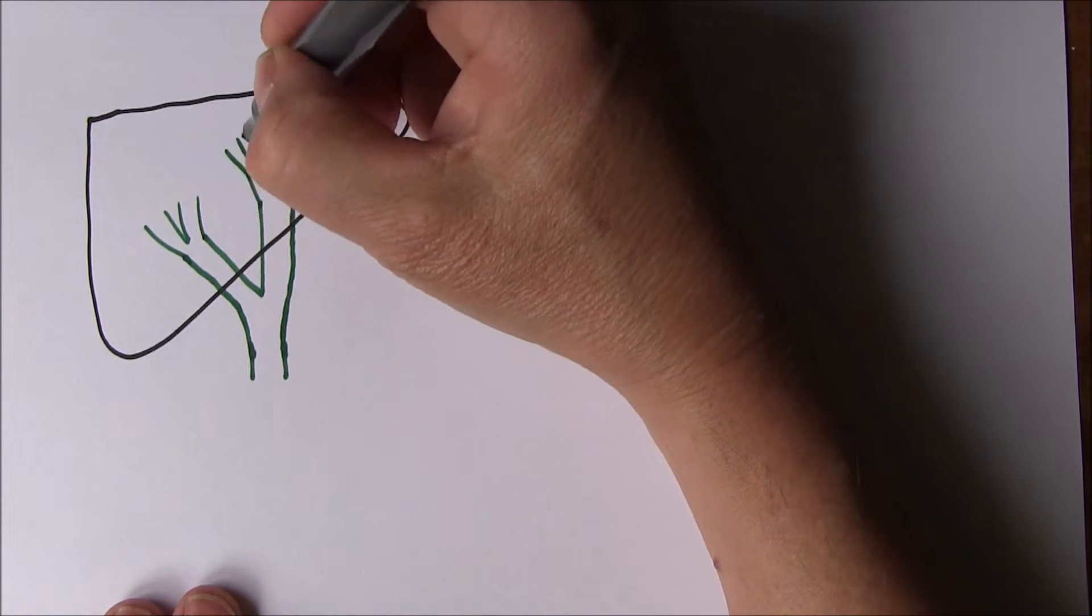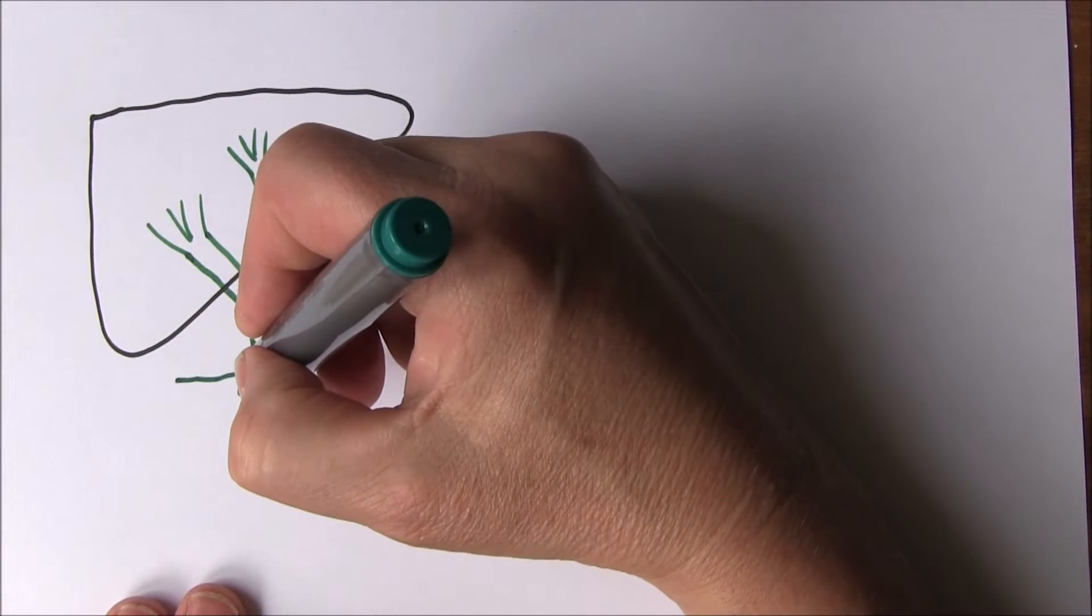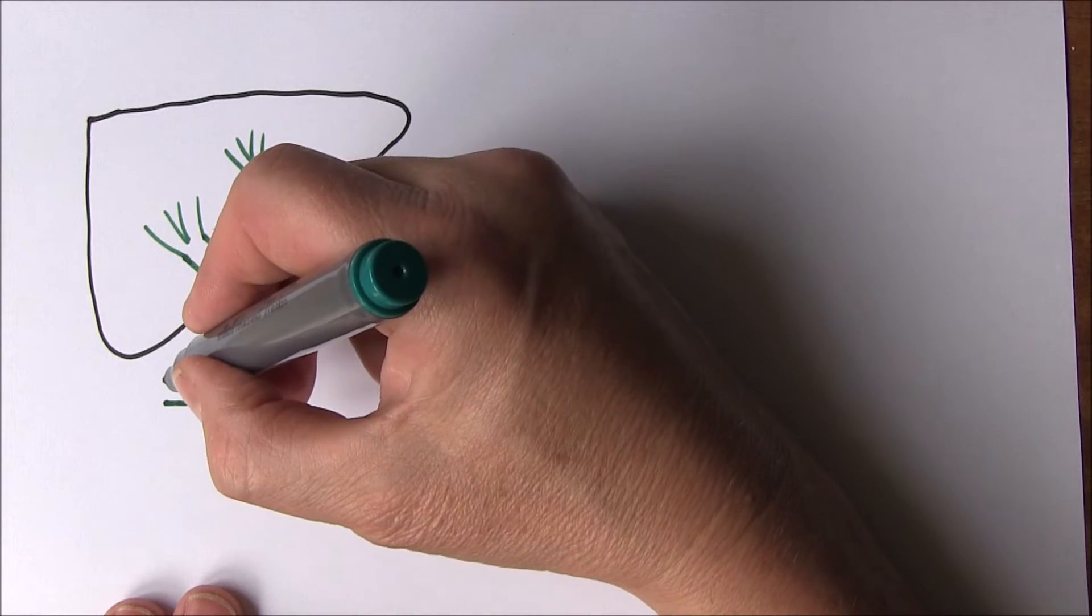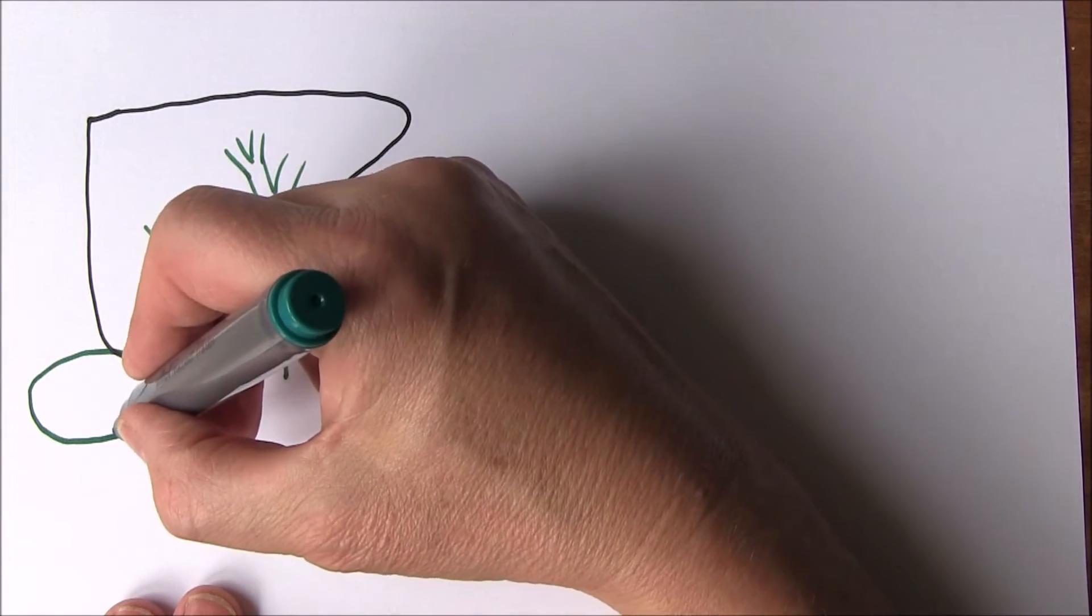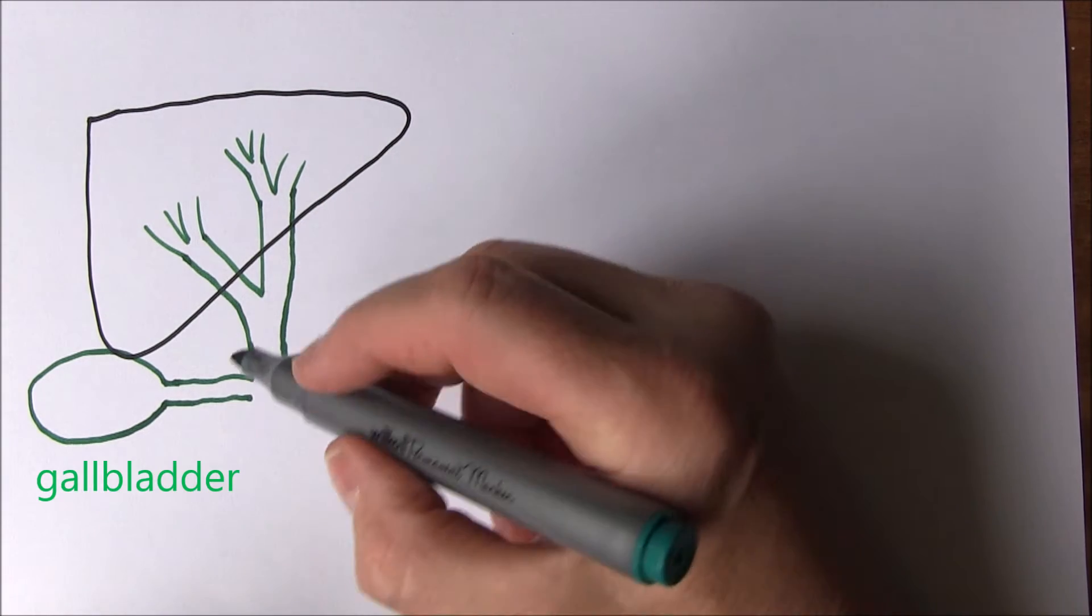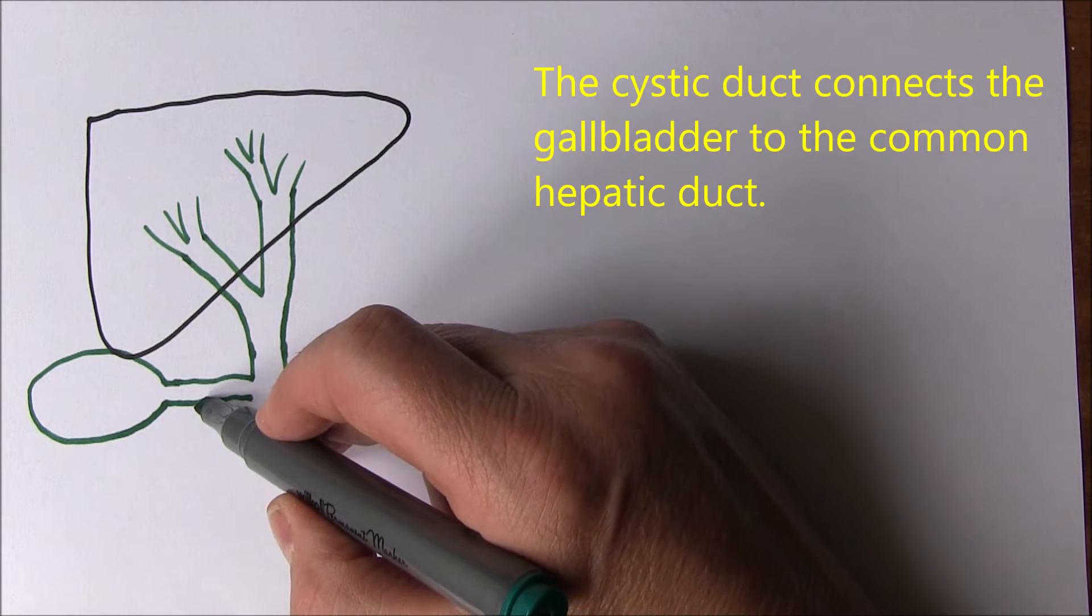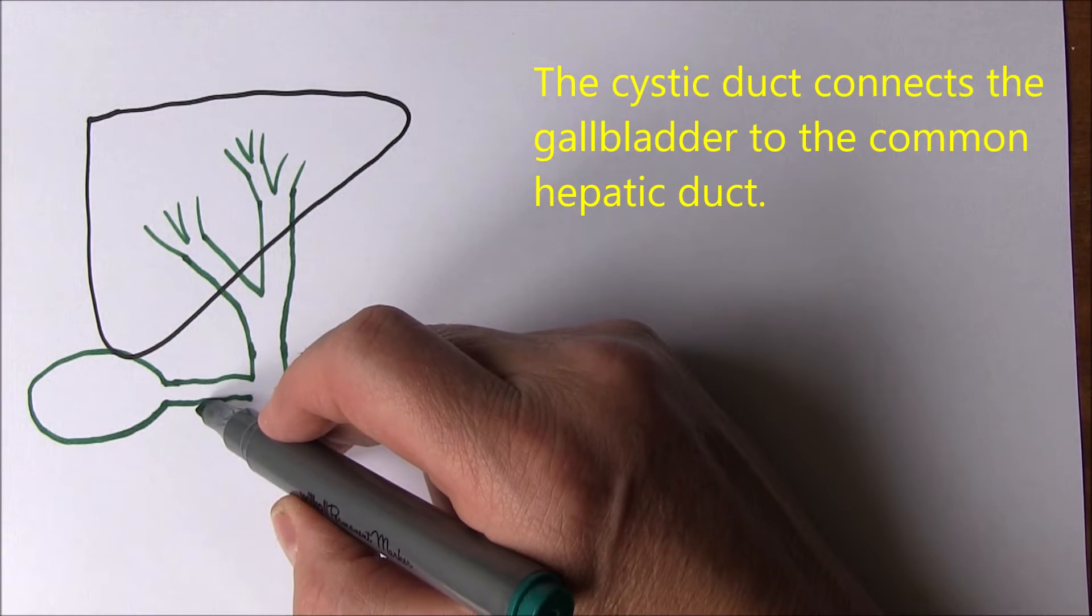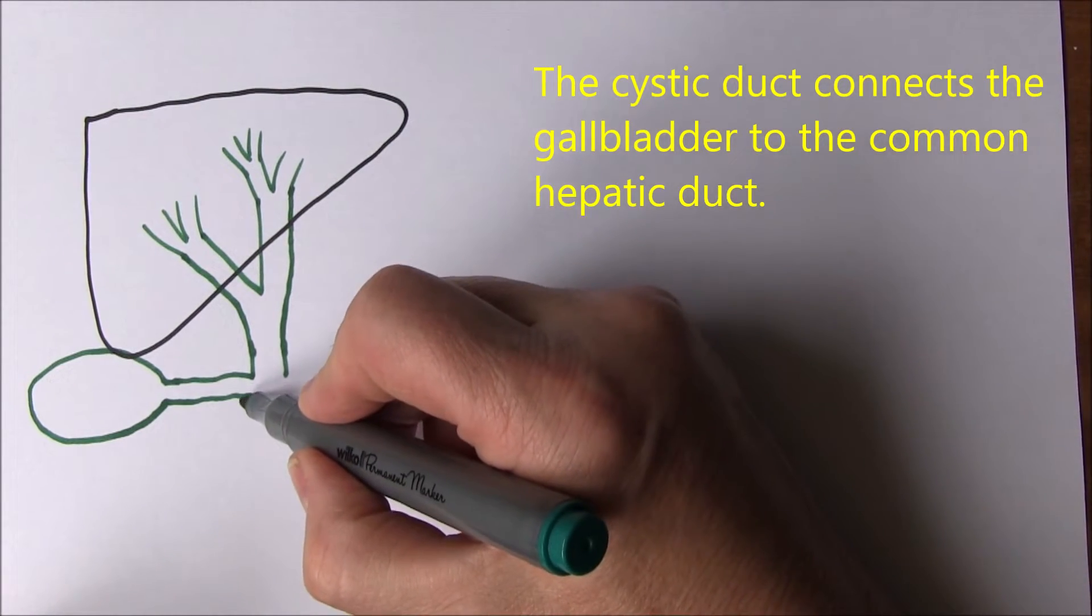Now branching off from here we have a duct that connects the common hepatic duct with the gallbladder. That duct is called the cystic duct. Cyst is a fluid-filled space, so cystic refers to the fluid-filled space, in this case the bladder, the gallbladder.